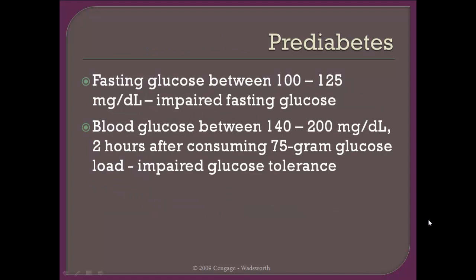There's also a condition called prediabetes. Prediabetes can be identified if a person has a fasting glucose level between 100 and 125, or if blood glucose levels are between 140 and 200 mg/dL after the tolerance test.